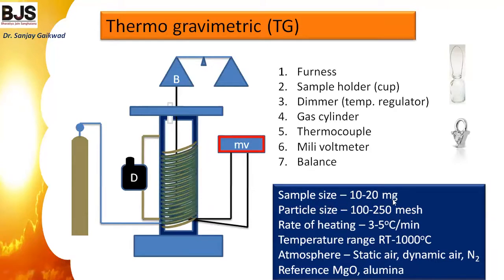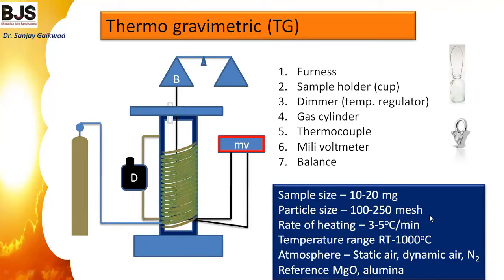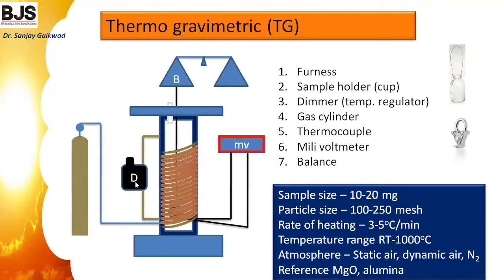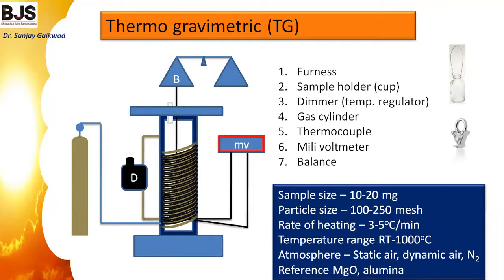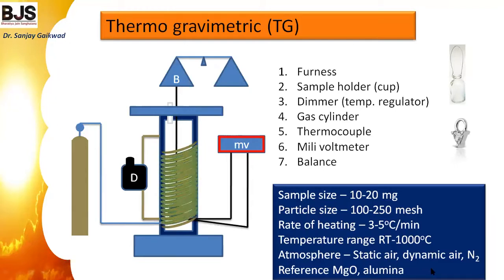The sample particle size may be 100 to 250 mesh size. With the dimmer, we increase the heating rate at only 3 to 5 degrees Celsius per minute. The temperature range starts from room temperature — ambient temperature — up to 1000 degrees Celsius. The atmosphere may be static air, dynamic air, or nitrogen.